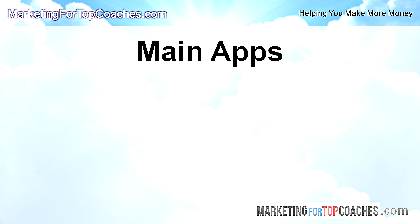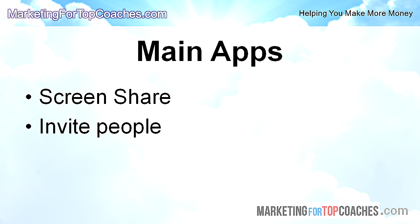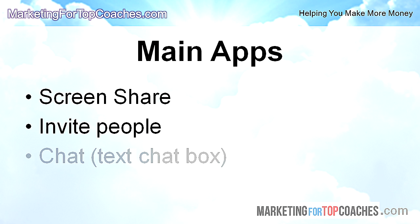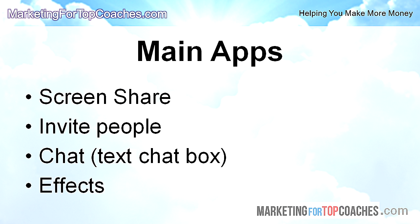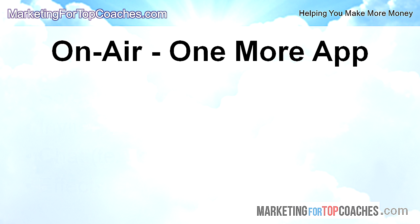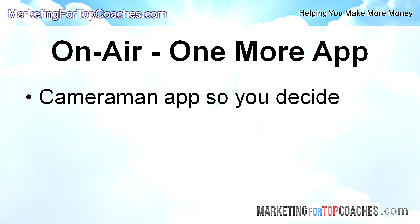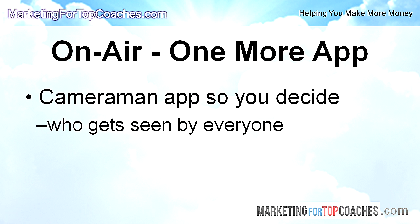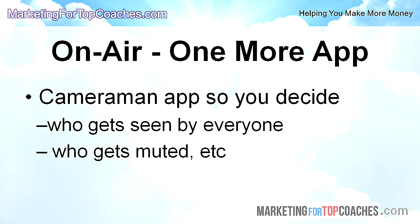The main apps for Google Hangouts On Air are screen share; invite people, where you can add presenters to your call; chat, where your audience can post questions and comments in the chat box; and effects with sound effects like audience clapping and other fun stuff. And there's one more important app — the cameraman app. It lets you decide who gets seen by everyone and who gets heard or muted.